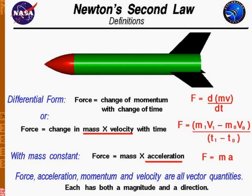Newton's second law defines force as equal to the change of momentum with change of time, which means force is directly proportional to the change in mass. For example, if we take a rubber ball and an iron ball and apply a light force to the rubber ball but more force to the iron ball, force is directly proportional to mass times velocity. This is Newton's second law.